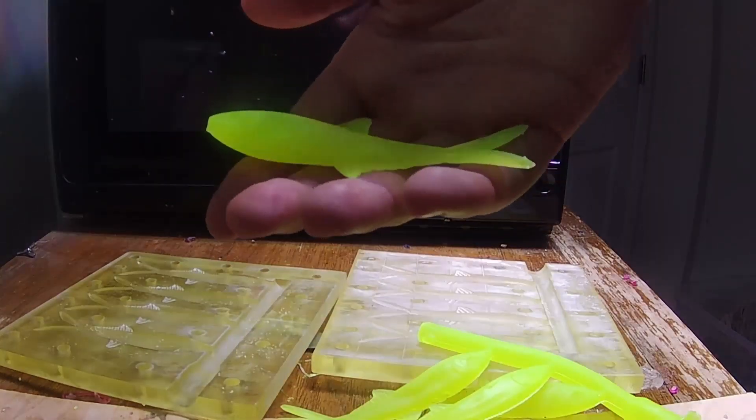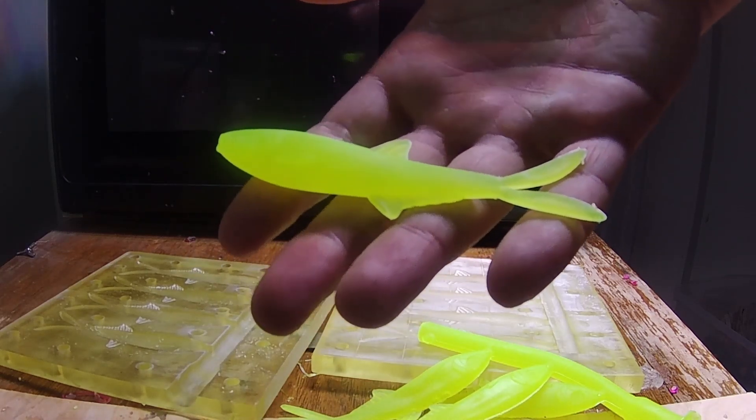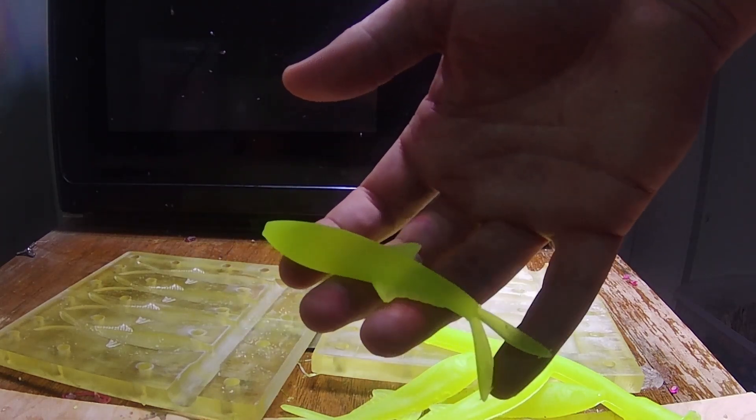This one came out quite beautiful yet again. Same thing, different color. Now that's what our chartreuse looks like. I'm going to get some of these lined up and I'm going to show you guys the eyes we're going to put on, and then we'll move on to the next bait.